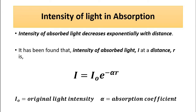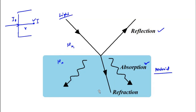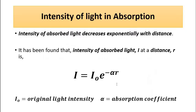Intensity of light decreases exponentially with distance in the case of absorption. Alpha (α) is the absorption coefficient, which is unique for different materials — it is a constant that has different values for different materials. So always remember: when light strikes a material, three important optical phenomena occur — a portion undergoes reflection following the laws of reflection, a portion undergoes refraction following the laws of refraction, and a portion undergoes absorption which follows this exponential law.